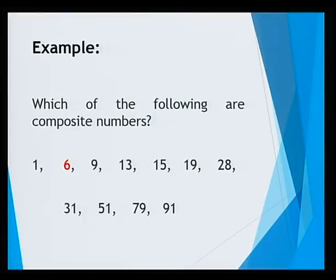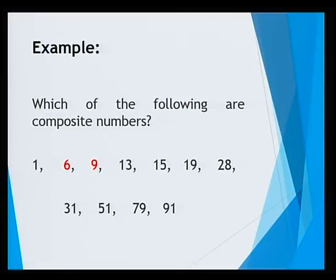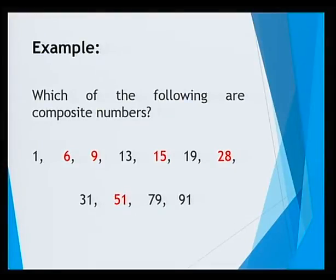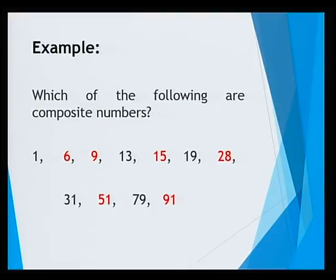Which of the following are composite numbers? 6 is a composite number because it has more than two factors — that is, 1 times 6 and 2 times 3. 9 is also a composite number. However, 13 is a prime number because it has only two factors. 15 will be a composite number because it has more than two factors. And 19 is a prime number. 28 will be a composite number — 1 times 28, 2 times 14, 4 times 7. 31 is a prime number, but 51 will be a composite number. Similarly, 79 is a prime number, but 91 is a composite number having more than two factors.